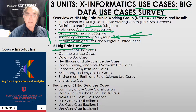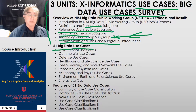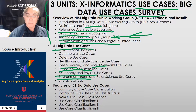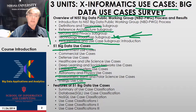The work described came from the requirements and use cases subgroup, which I co-chaired. Those 51 use cases were divided into broad areas: government, commercial, defense and national security, healthcare and life sciences, medicine, biology, deep learning and social networks, the research ecosystem like accelerators. Astronomy and physics had lots of use cases, as did environment, earth and polar science — though we only had one energy use case.